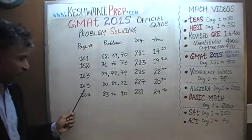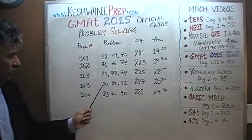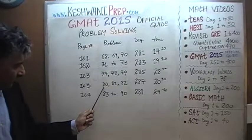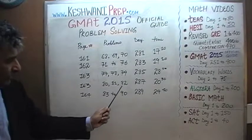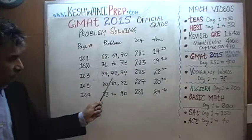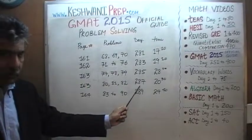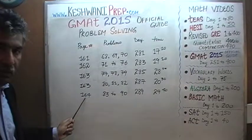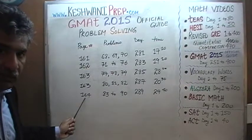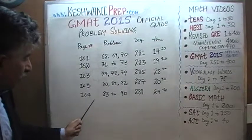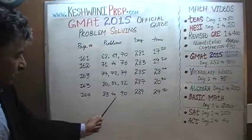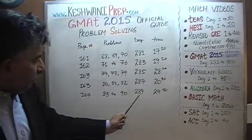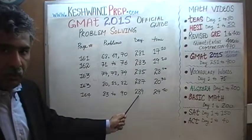On the same page 163, you will find problem numbers 80, 81, and 82. Those three problems were done on day number 287. And finally, on page number 164, you will find problems 83 through 90, and those were solved on day number 289.